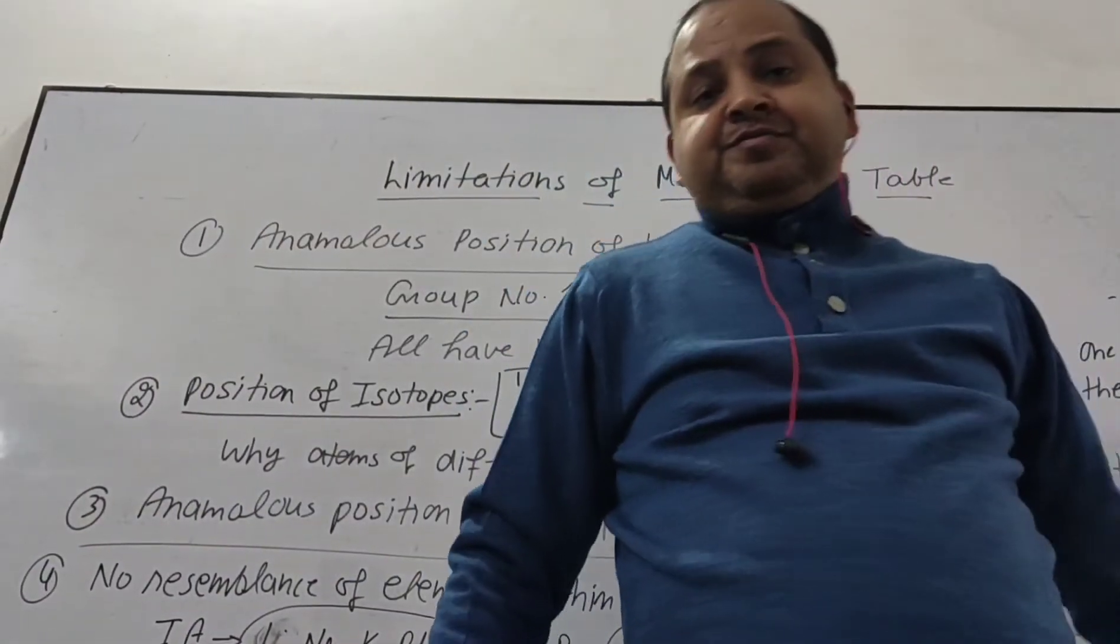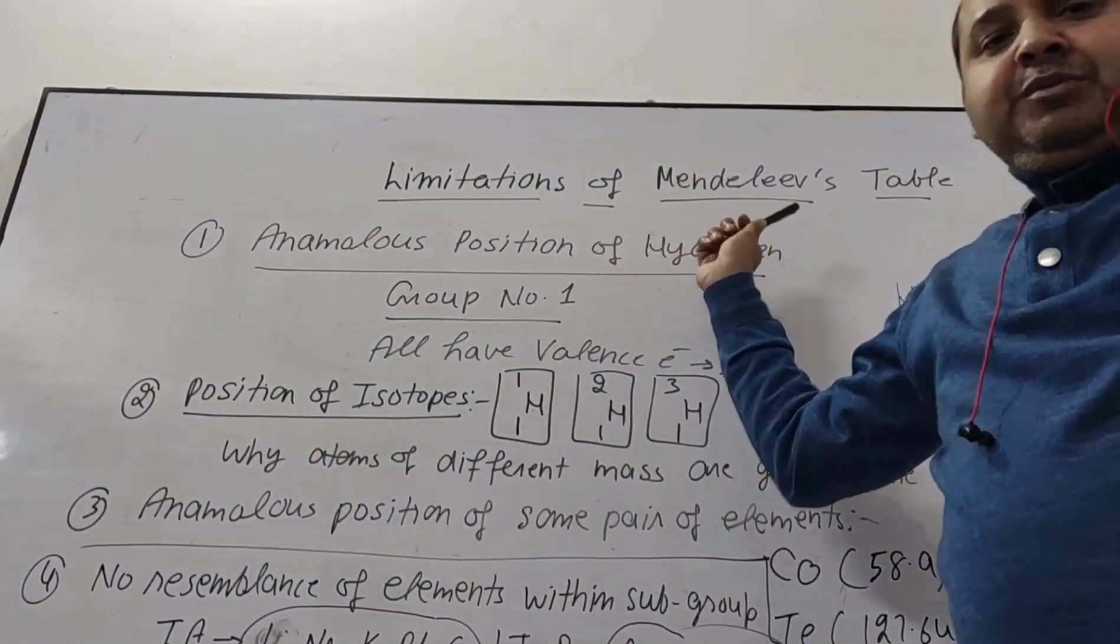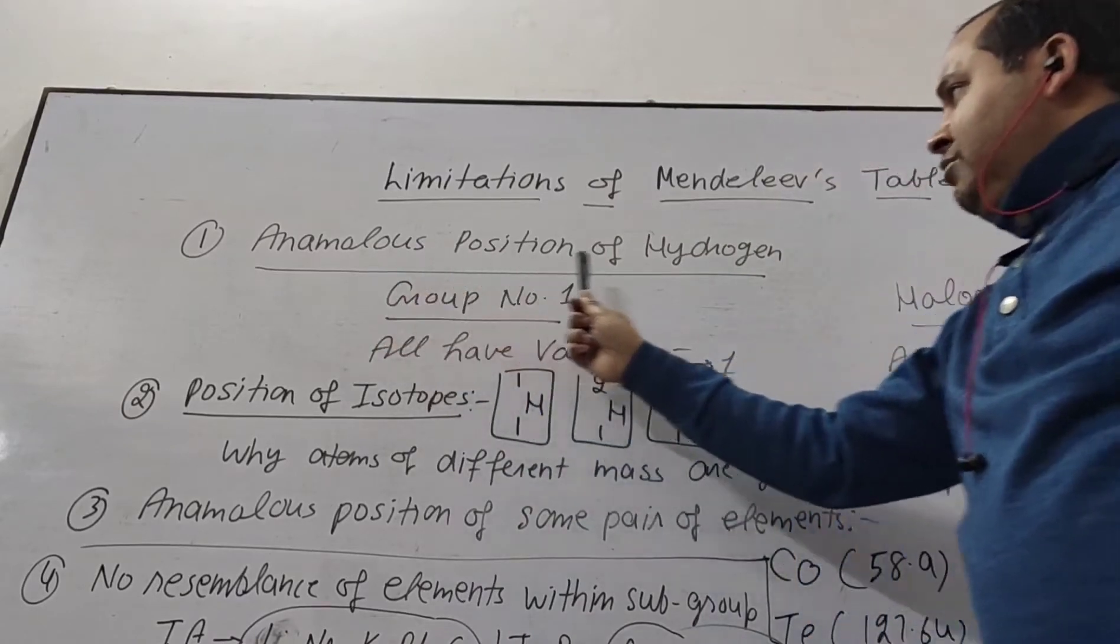Now we will start the limitations of Mendeleev's Periodic Table. You can see that first is anomalous position of hydrogen.